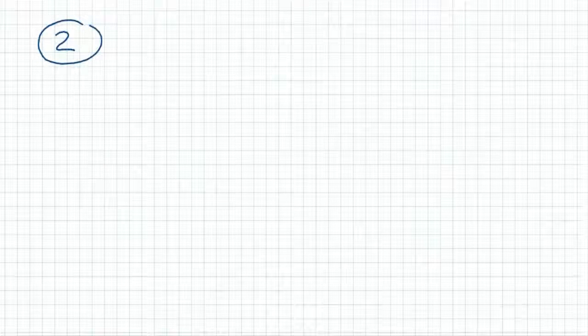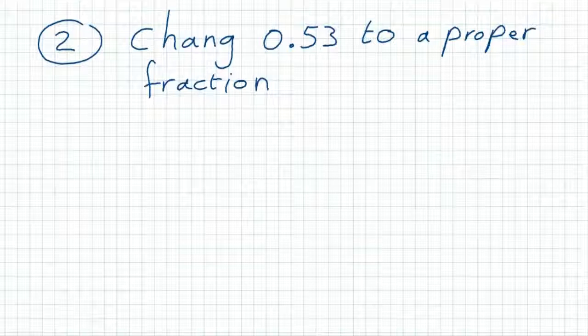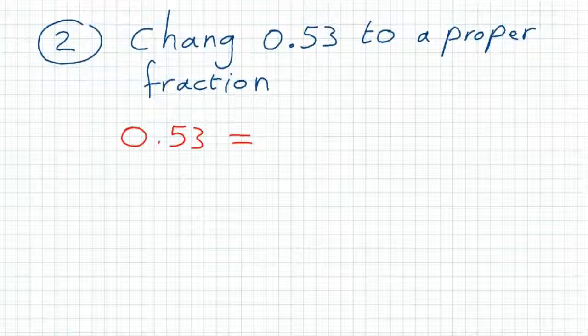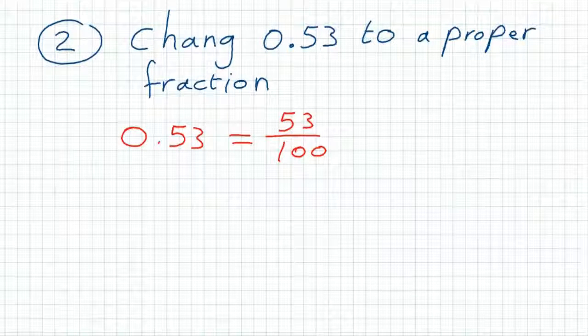Example 2: change 0.53 to a proper fraction. To do it without a calculator, 0.53 can be written as 53 over 100. If there is any simplification here, we can simplify. But there is no common factors between 53 and 100. So this is our fraction notation for this decimal number.